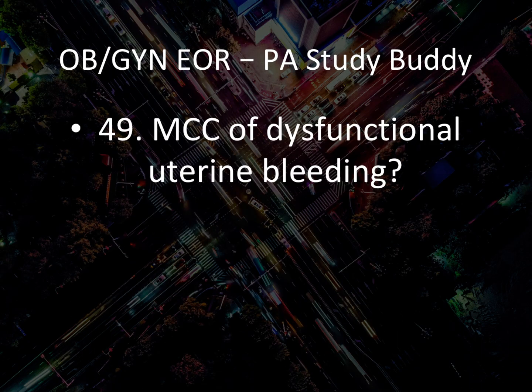Question 48: Most common cause of dysfunctional uterine bleeding — fibroids. Most common cause of dysfunctional uterine bleeding is fibroids; test of choice is pelvic ultrasound.